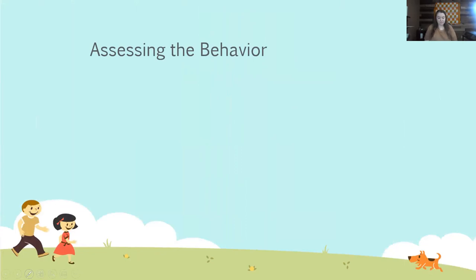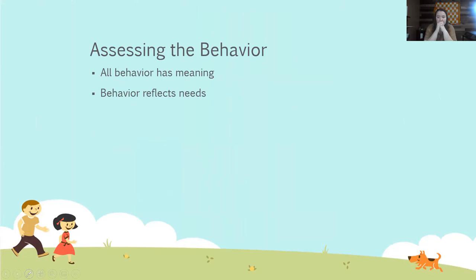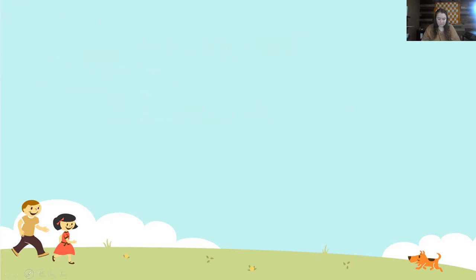Assessing the behavior — it's important to remember that all behavior has meaning. Their behavior reflects their needs. It's a way that they show us that one of their needs is possibly being unmet, or has chronically been unmet in the past. And we always need to remember that trauma affects how children behave. We want to think about these questions when dealing with children in crisis: How do children learn to get their needs met when they experience stress? What types of behaviors are they showing? What is the need they're trying to tell us? All behaviors have meaning — find out the meaning behind a behavior.